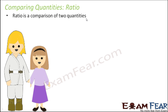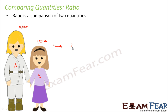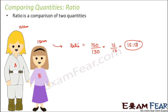Let's say that these are two girls, let's call them A and B. How do we express ratio? Let's say the height of A is 150 cm and the height of B is 130 cm. What is the ratio of heights of A and B? The ratio of the heights would be 150 cm divided by 130, which is equal to 15 by 13. So this is the ratio of the heights of A and B respectively.